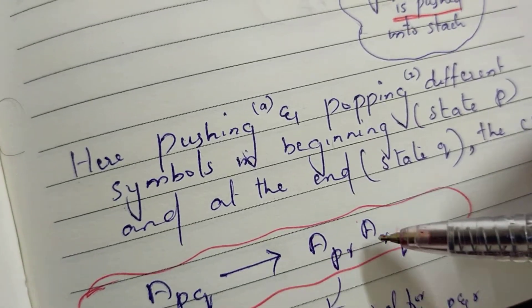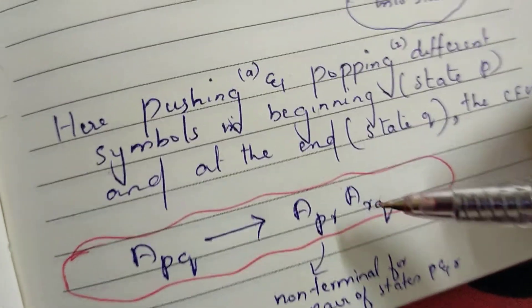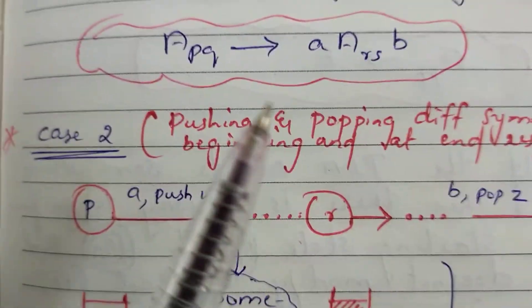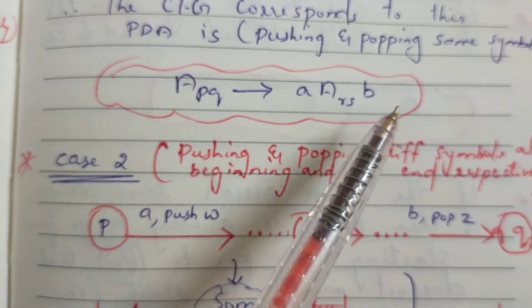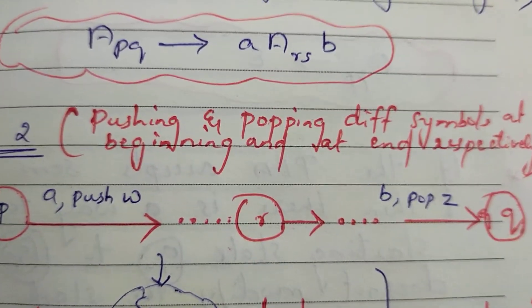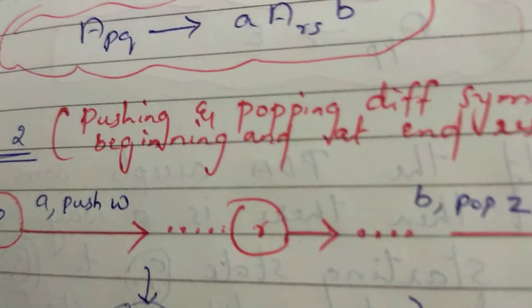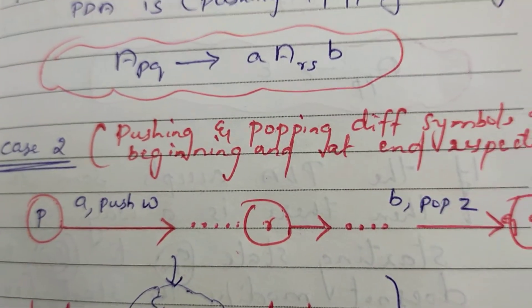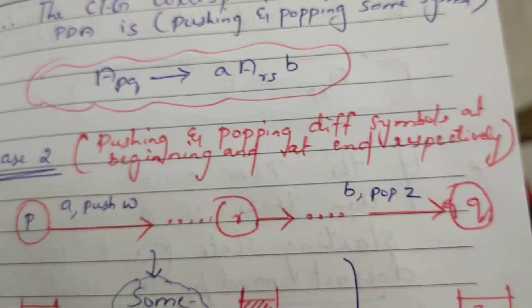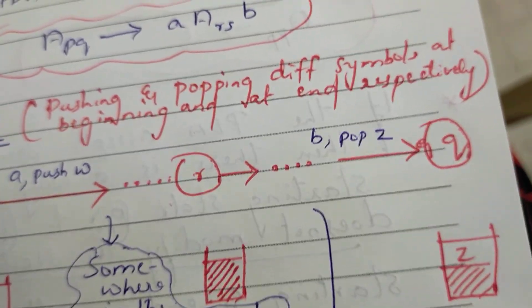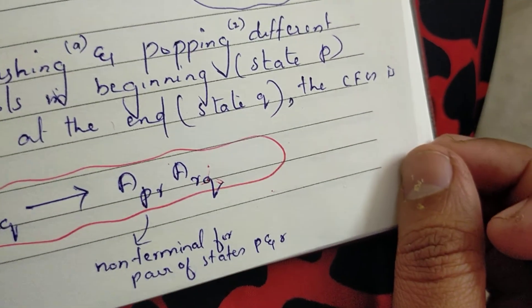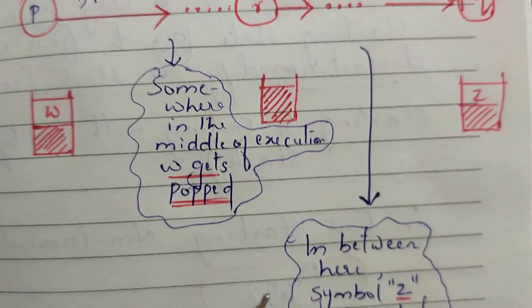Now pushing and popping different elements — making the beginning and end respectively — our grammar is here. For the same element, it's here. Such a way we have P to R to R to R, and we have the context-free grammar. We have to construct it in this rule. So our second part is also proved. Thank you.